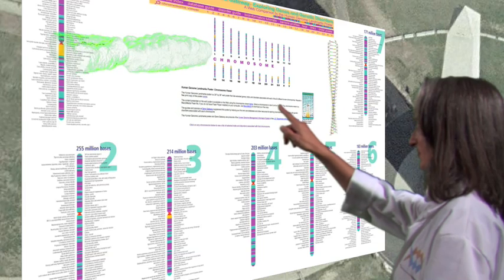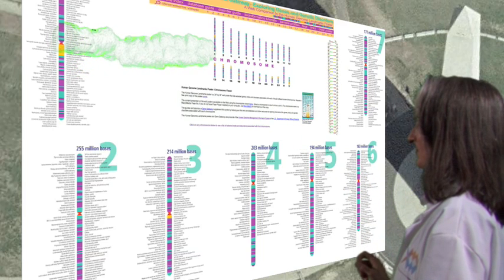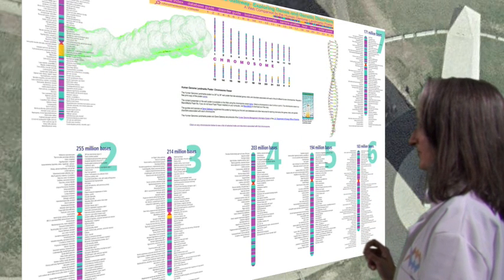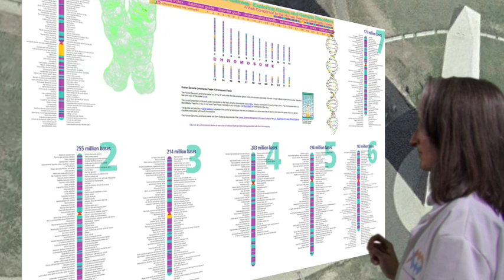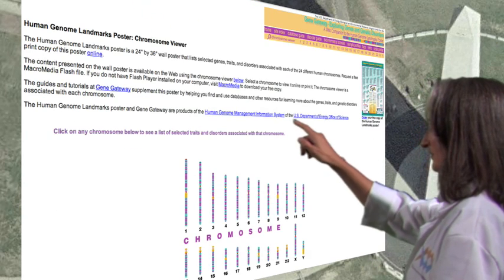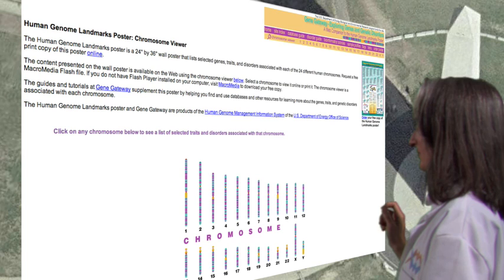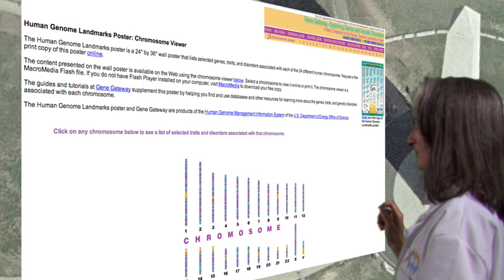The U.S. government maintains a website with much of the current information about genes, chromosomes, and proteins. In the section labeled Chromosome Viewer, you can select a chromosome and see how many base pairs or letters are on the chromosome.